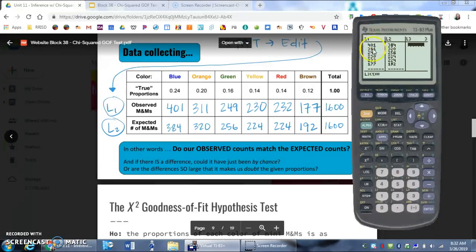Right now I have my observed values in L1 and my expected values in L2. This is for the M&M example we did in class. These are numbers I made up.